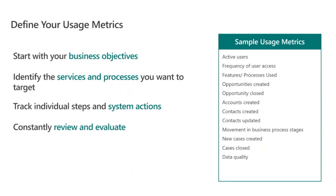Then you take those services and processes related to these goals and break them down into actions and activities that users will have on a day-to-day basis — these are the KPIs you want to track in the system. There are a significant number of actions in the system — it could be in the hundreds — so you want to make sure you're targeting the right set of KPIs to monitor. We usually recommend starting with a small set of KPIs and then reviewing and updating over time.